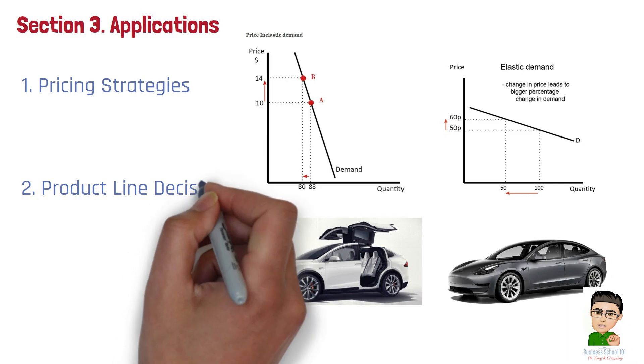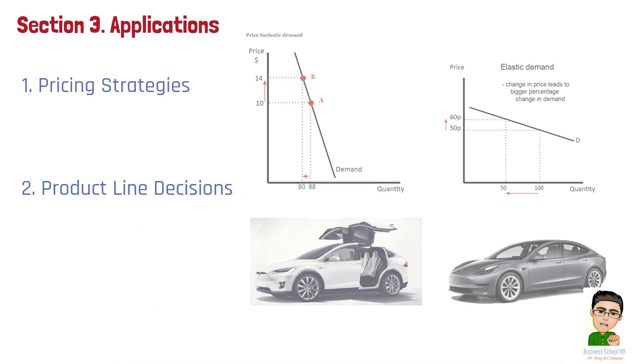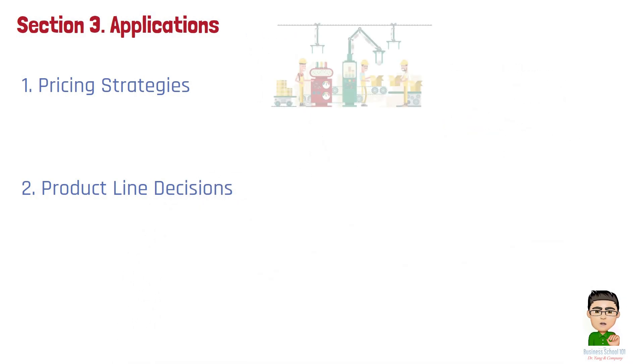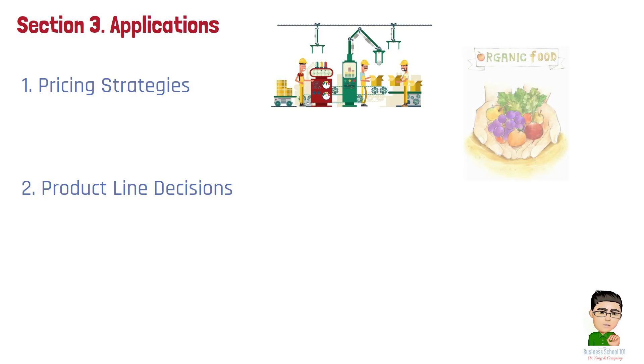Number 2: Product Line Decisions. Elasticity aids in making product line decisions by revealing how consumers respond to different products. Companies might focus on products with elastic demand by using promotions and discounts to drive sales, while positioning inelastic products as premium options. For example, a food and beverage company might expand its organic product line if it identifies that demand for organic products is inelastic, thus capitalizing on higher margins.